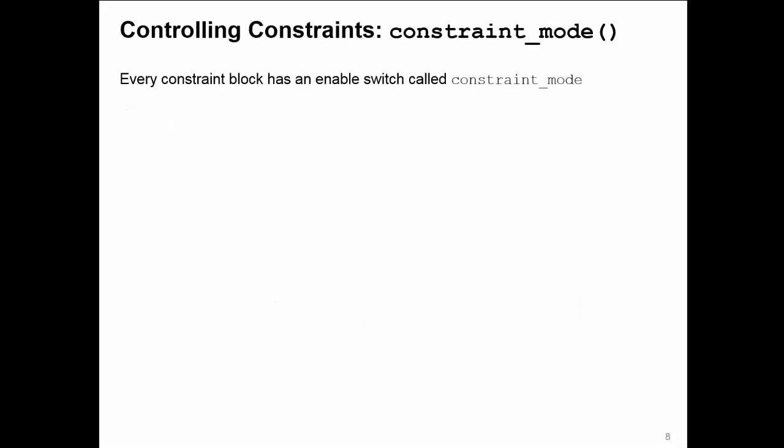Now you can control constraints using something called constraint mode. Every constraint block has a built-in switch called constraint mode. This is turned on by default. If you disable it by setting it to 0, then the constraint is disabled for randomization.